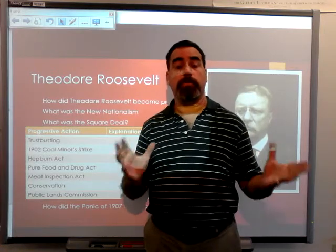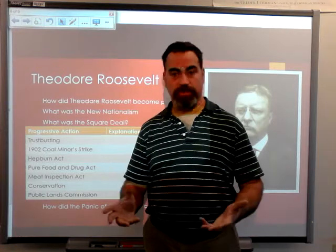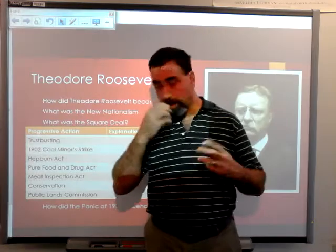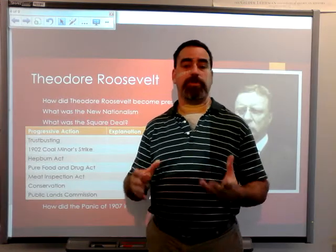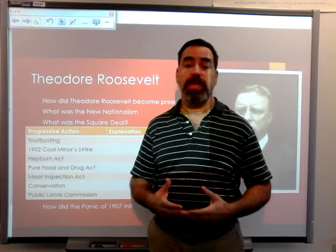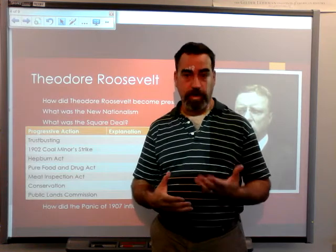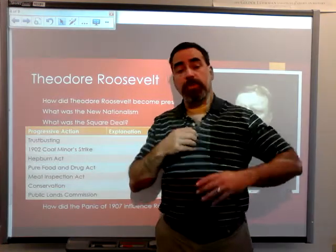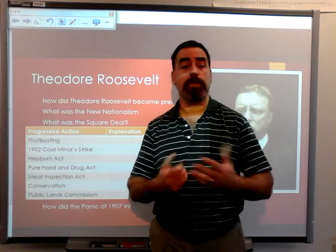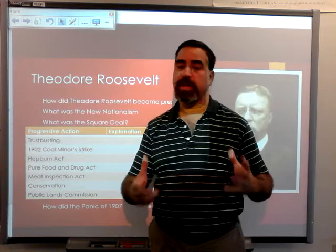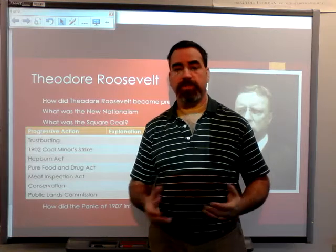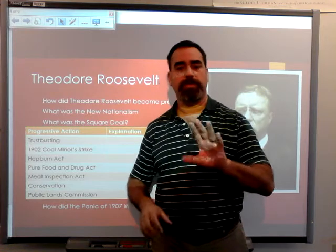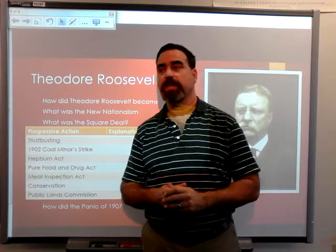Instead of threatening to break the strike, Roosevelt said he would use federal troops to take over and nationalize the coal mines — which appalled the owners. He said the miners wanted a 20% wage increase and an eight-hour workday, and the compromise would be a 10% raise and a nine-hour workday. The owners agreed and the strike was over. However, the coal miners were also seeking recognition of their union, and Roosevelt would not go that far — there were limits to his progressivism.